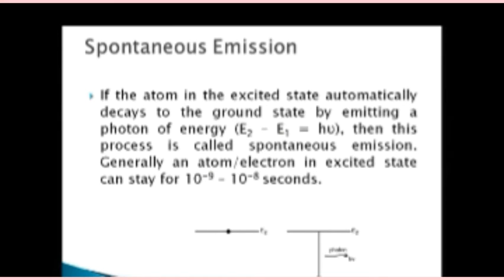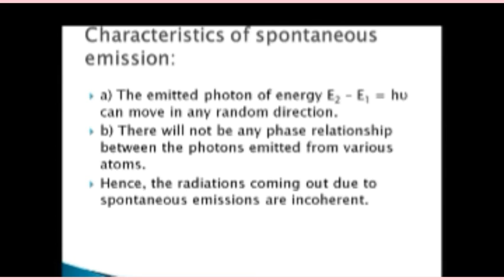Spontaneous means by itself, and emission means to emit energy. So the excited electron or atom will de-excite to the ground state by itself after approximately 10 to the power of minus 8 seconds. Characteristics of spontaneous emission: the emitted photon of energy E2 minus E1 equal to h nu can move in any random direction; there is no phase relationship between photons emitted from various atoms, making them incoherent. This is why spontaneous emission cannot be the principle of laser.